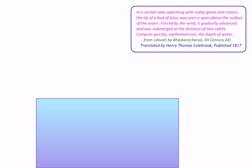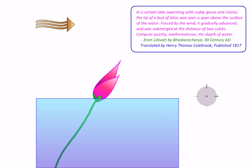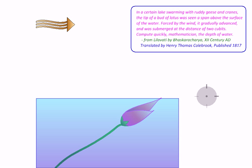It starts with a pond in which stands a lotus and there is a gentle breeze. Because of this, the lotus starts swaying and eventually the breeze forces the lotus to get submerged in water.